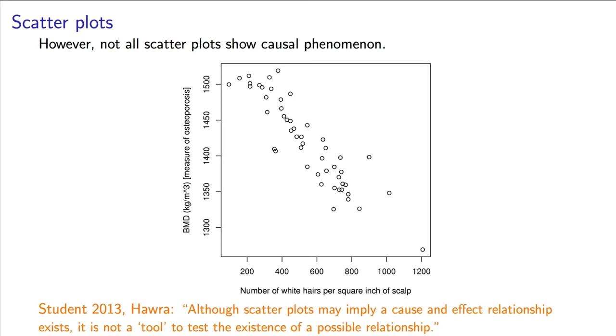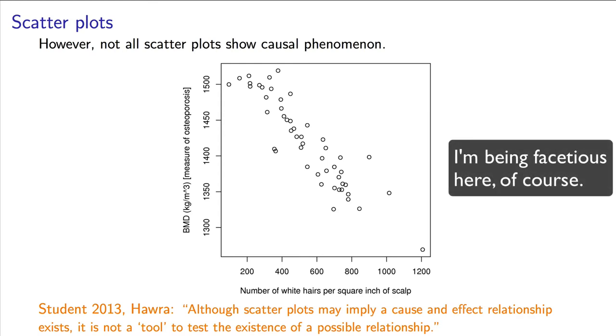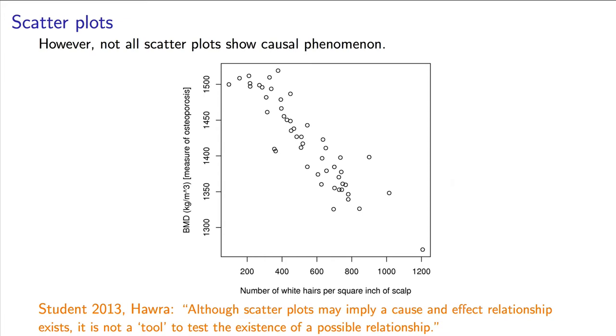The answer is clearly not. If there were a relationship, we could improve a person's bone mineral density by simply coloring their hair. White hairs don't cause low BMD, and low BMD does not cause white hairs either.